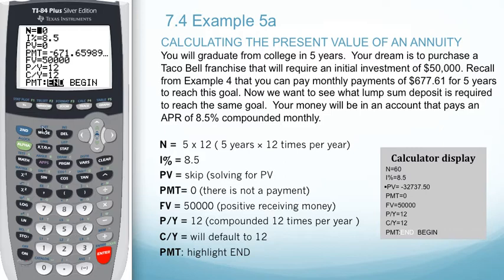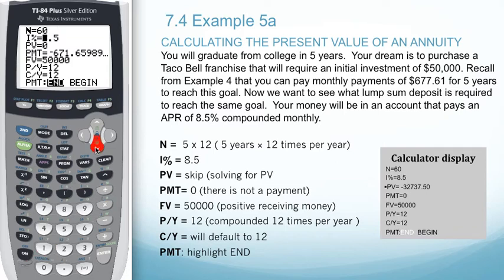In this case, we're going to invest for five years compounded monthly, which would be times 12. The interest rate is still going to be 8.5%. We're going to skip over present value and this time change our payment to be zero. Our future value is still going to be $50,000, and the payments per year and compounding periods per year will still be 12.